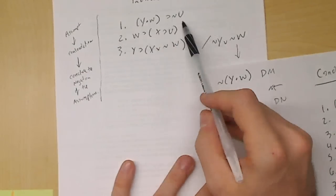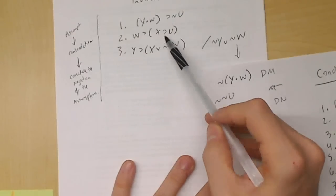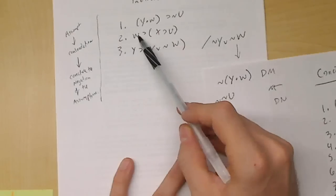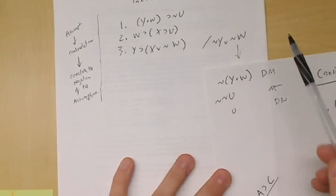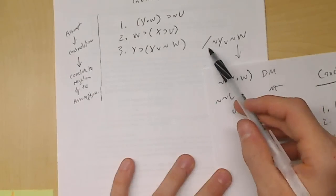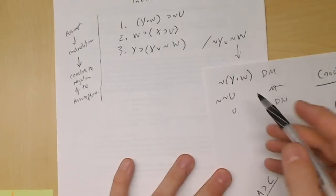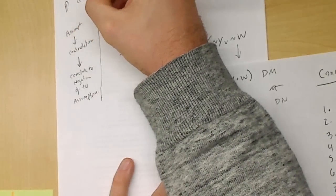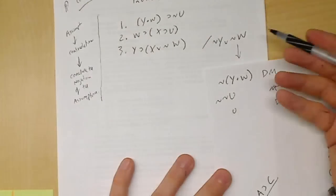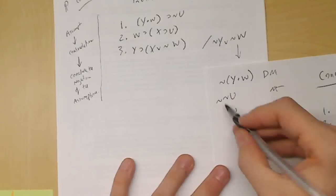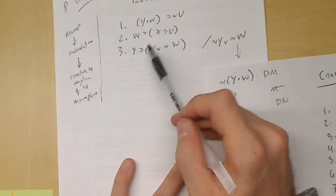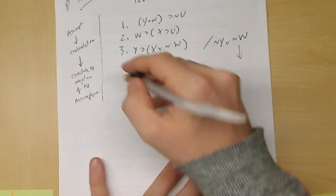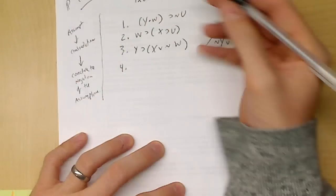What if I just did a negation of this whole thing instead? One of the strategies with the indirect proof is you can always use the conclusion to make your assumption — turn the conclusion into your assumption. So let's make this our assumption: ¬(¬Y∨¬W). Notice this is not DeMorgans since I kept the disjunction. So if I assume ¬(¬Y∨¬W), this is going to be my AIP, and I'm writing it off to the side.